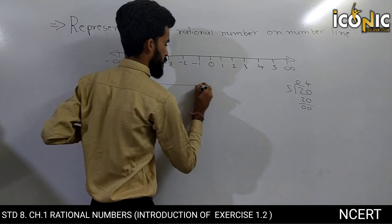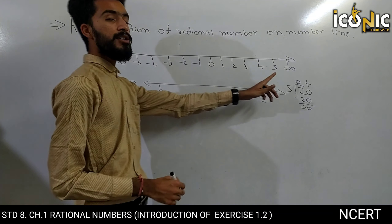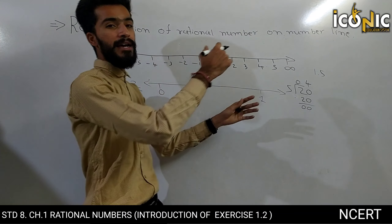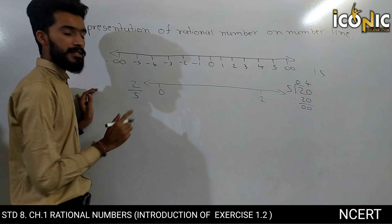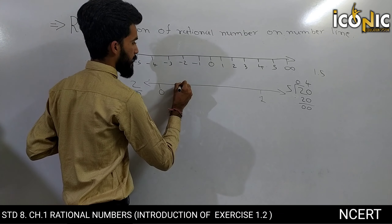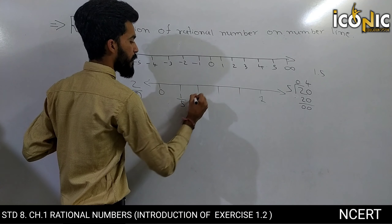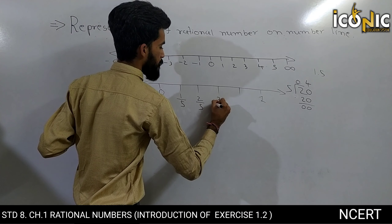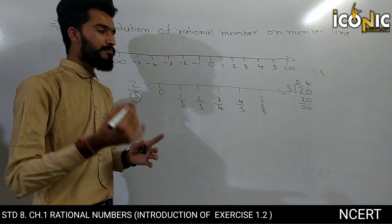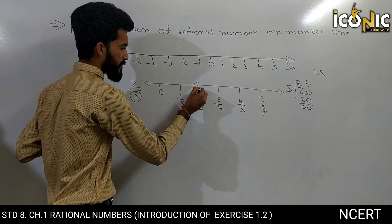Toh uske liye aam number line lete hain. Yahan par zero, yahan par one. Humhe pata chal gaya ki woh one se chhota number hai, toh woh 0 aur 1 ke beech mein hi kahin par aayega. Suppose answer mera 1.5 aaya hota toh hum jaante ki woh 1 aur 2 ke beech mein hota. Ab ise represent kaise karenge? Neeche 5 numbers diye gaye hain - yeh sabse important cheez hai. Neeche 5 numbers, toh iske beech mein 5 parts hone chahiye. Toh yeh aa gaya 1, 2, 3, 4 aur 5. Toh yahan se hum karenge start: 1 by 5, 2 by 5, 3 by 5, 4 by 5, aur yeh 5 divided by 5 yaani ki 1. Toh yahan par aa gaya hamara 1, aur 2 by 5 jo humhe find karna tha woh humhe mil gaya.